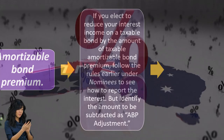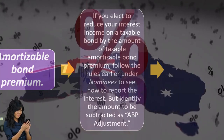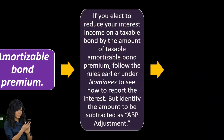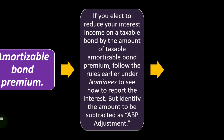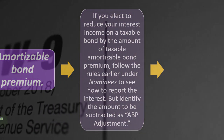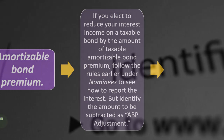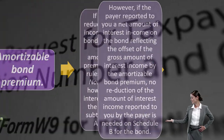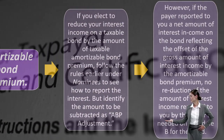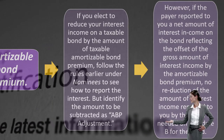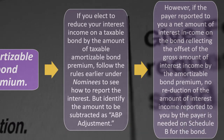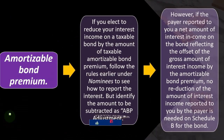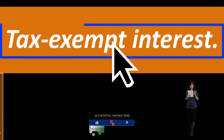If you elect to reduce your interest income on a taxable bond by the amount of the taxable amortizable bond premium, follow the nominee rules to report the interest, identifying the amount to be subtracted as 'ABP adjustment.' If the 1099 isn't reporting the correct amount of interest after accounting for the amortizable bond premium, you must show your work. However, if the payer has already reported a net amount of interest income reflecting the offset by the amortizable bond premium, no reduction on Schedule B for that bond is needed.